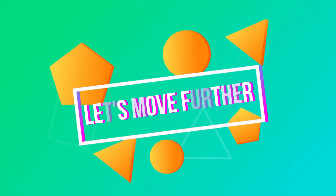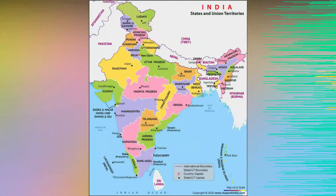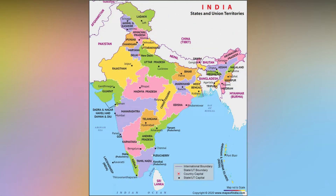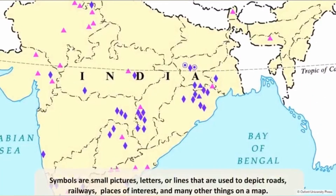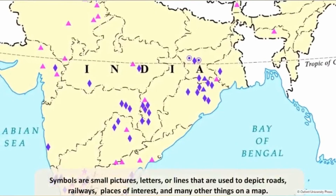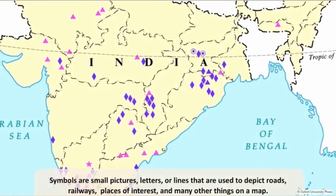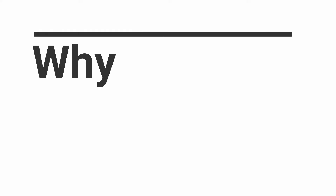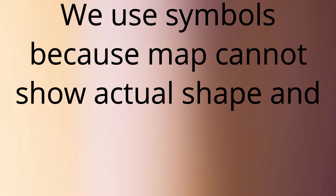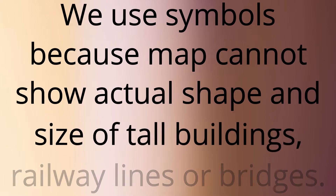Hope you all are clear with the directions. Let's move further. Can you see in this map small pictures, letters and lines? They are all symbols. Symbols are small pictures, letters or lines that are used to depict roads, railways, places of interest and many other things on a map. We use symbols because a map cannot show the actual shape and size of tall buildings, railway lines or bridges.